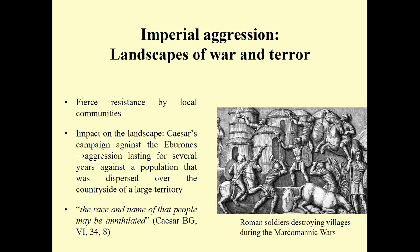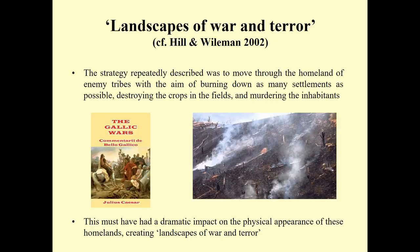There must have been a huge impact on the landscape since the campaigns against the Eburones took place over several years against a population dispersed across the countryside of a large territory — very different from attacking a single fortified place. Thinking about this impact, one can look at later testimony from the Marcomannic Wars: representations on a column depicting Roman soldiers burning down local villages and killing people. We can think of this as landscapes of war and terror, to use the title of a book by Hill and Willemann. Roman sources describe troops moving to the homeland of enemy tribes, burning settlements, destroying crops in the field, and murdering inhabitants.